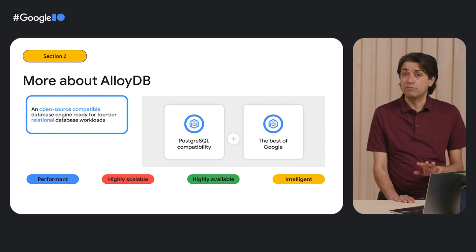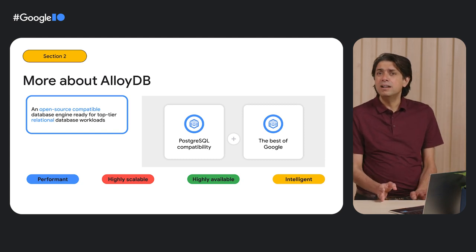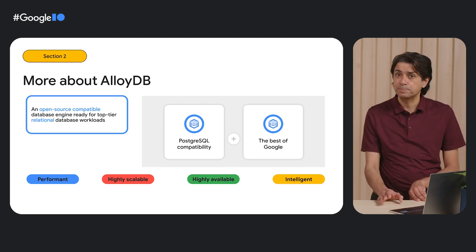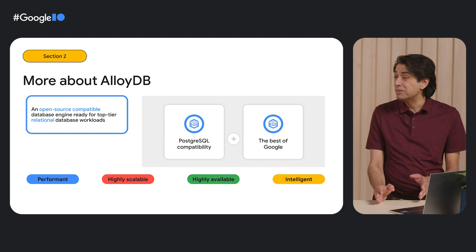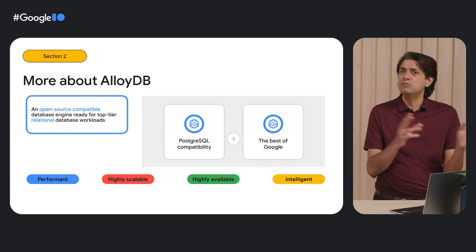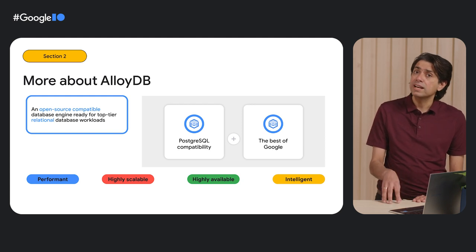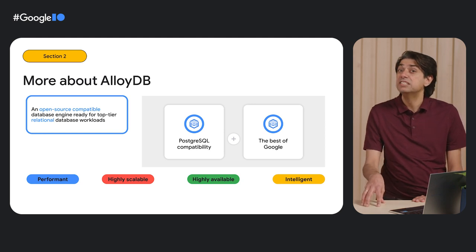AlloyDB is up to a hundred times faster for analytical queries and scales to thousands of eCPUs for read workloads. It also provides a four-nines, no-nonsense SLA, which is inclusive of maintenance. We took a hard look at how we can remove or reduce toil for Postgres developers and brought in a ton of machine learning algorithms for vacuum management, memory management, and how you move data across caching tiers and storage tiers. Lastly, we integrated a Vertex AI service so developers can invoke Vertex AI models straight from the SQL query.